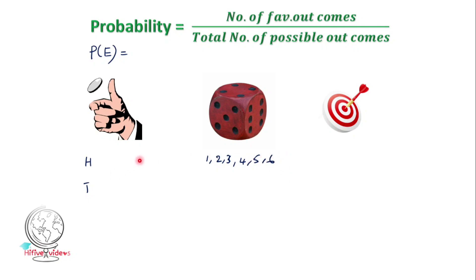Here we can test this particular region. Head and tail are events. Numbers in a particular area are also events. Tail is an event. So here we are going to find the chance of getting head. That is the probability of getting head, and that is the probability of getting tail.